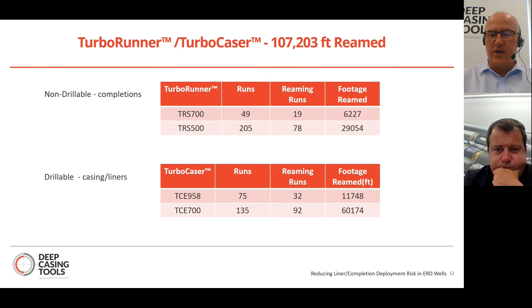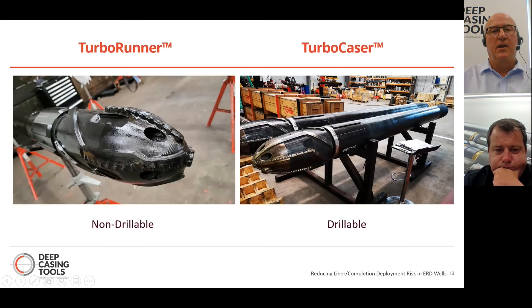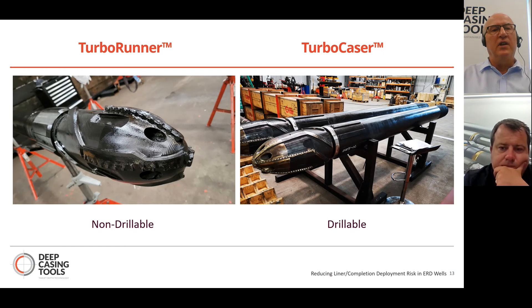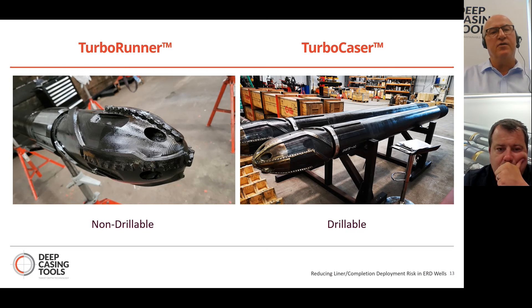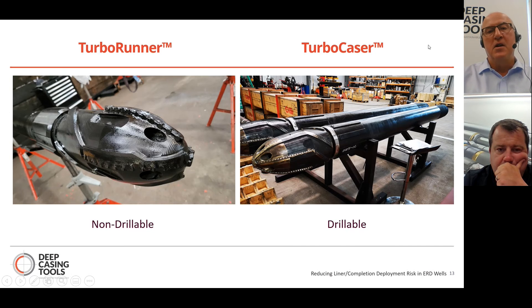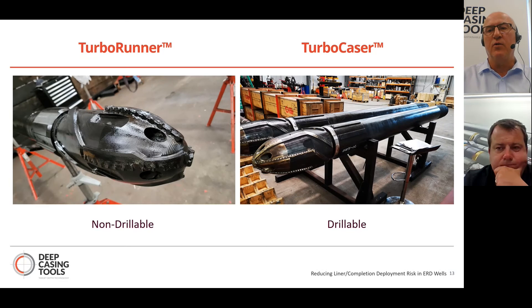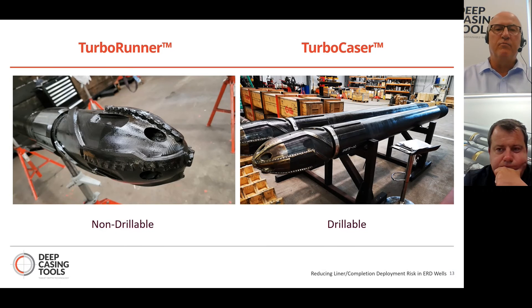Here's a picture of what the Turbo Runners and Turbo Casers look like from our workshop. On the left is our non-drillable Turbo Runner — you can see the bullet profile of the reaming shoe, good at opening up tight spots, with PDC cutters going all the way down to the nose. It's a high-speed turbine-powered reaming shoe. On the right is the Turbo Caser — you can see the aluminium nose that is drilled out by the next drilling BHA when drilling the next hole section.